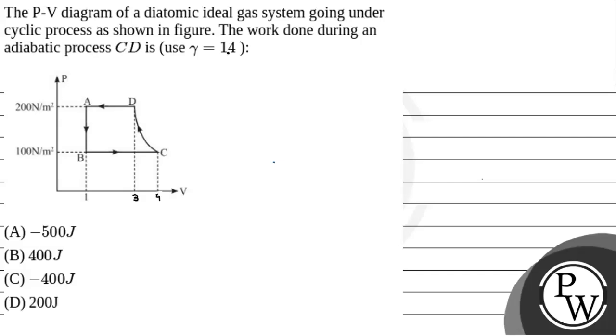Let's see the question. The question we're given in the field: The P-V diagram of a diatomic ideal gas system going under cyclic process is shown in figure. The work done during an adiabatic process CD will be in work. So this path is C to D. In this path CD, the work done along CD is to find. That is an adiabatic process.